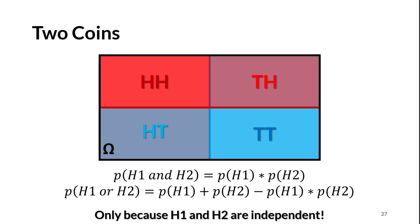We can solve this using complementation as well. Of the four equiprobable outcomes, only one doesn't contain at least one heads: the lower right, which is TT. This means the probability of getting at least one heads equals 1 minus the probability of getting no heads, which is the probability of outcome TT. This is 1 minus one-quarter, or 0.75.